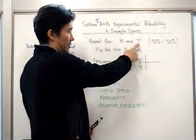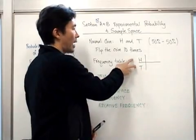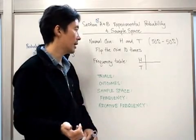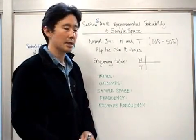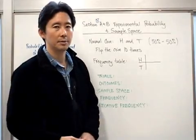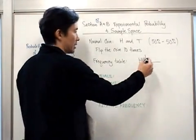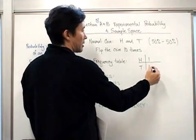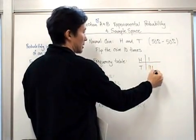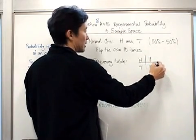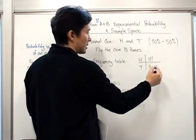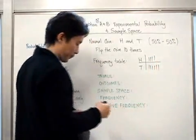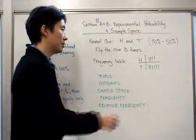The frequency table will list heads and tails, because those are the two outcomes we're going to have. We're going to count how many times we actually get a head and how many times we get a tail based on flipping the coin ten times. For example: heads, tails, tails, tails, heads, tails, tails, heads — that's eight — heads, and tails again.